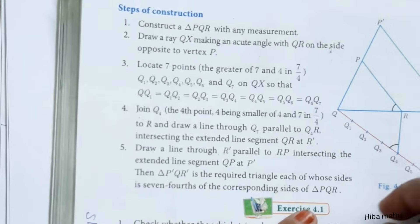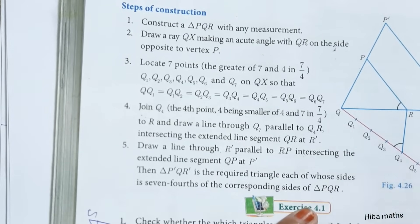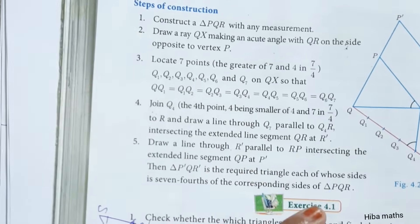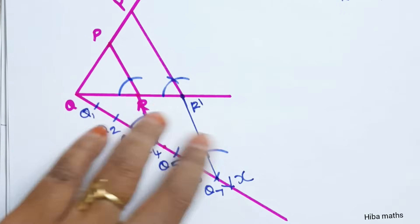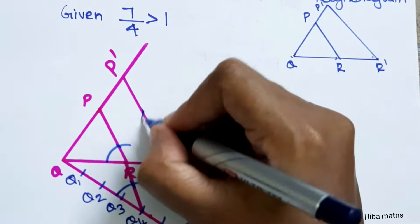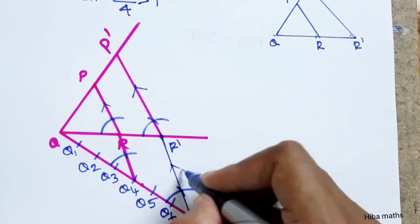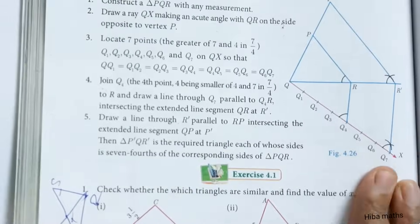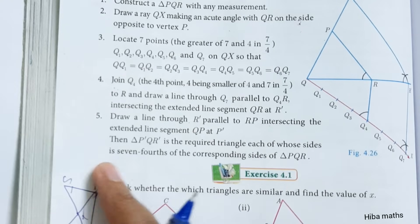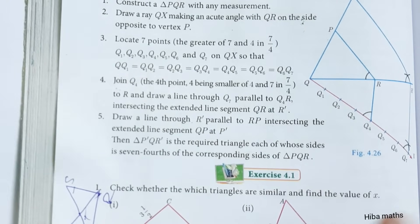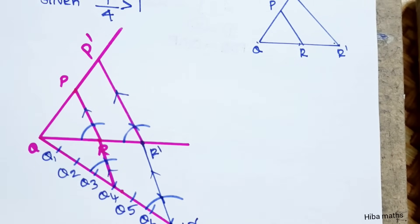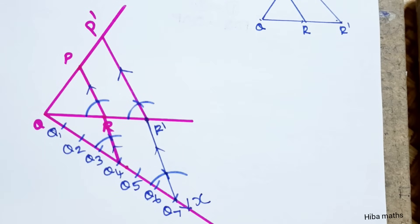Intersecting the extended line segment, we drop a line through R' parallel to RP, intersecting the extended line segment QP at P'. This is the required triangle. The triangle PQR' P' is the required triangle, each of whose sides is 7 fourths of the corresponding sides of triangle PQR.